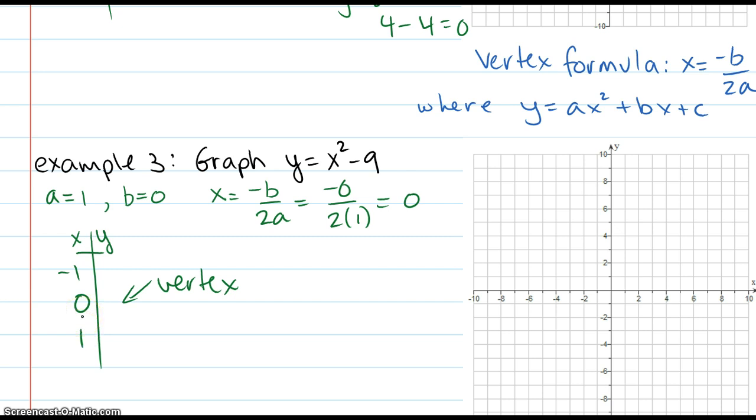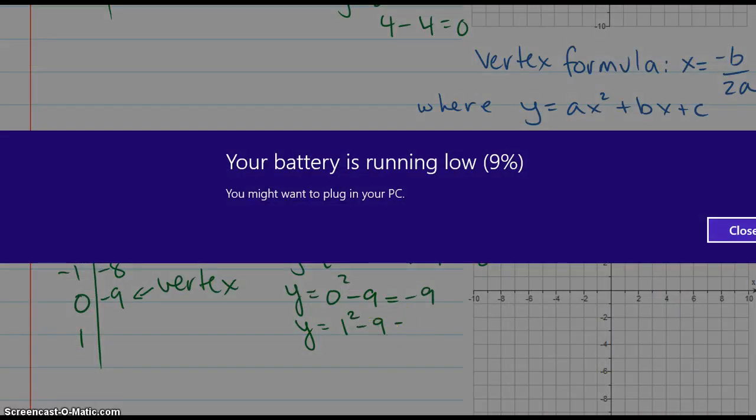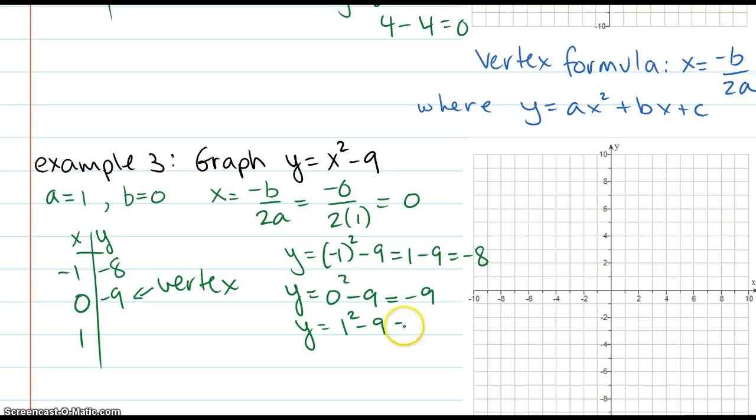1 to the left, 1 to the right. And if I plug in these values, let's do 0 first because it looks nice and easy. y equals 0 squared minus 9. That would be negative 9. Plug in 1. That would be 1 squared minus 9. 1 minus 9 is negative 8. And I should have said negative 1. Let's do that again. Not that it's going to matter because negative 1 squared is 1. And 1 minus 9 is still negative 8. Plug in 1. 1 squared minus 9. We get 1 minus 9, which is also negative 8.